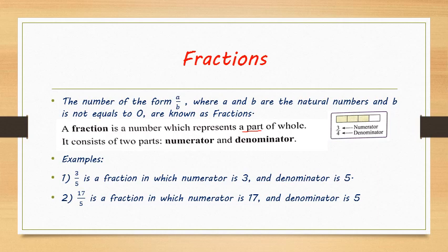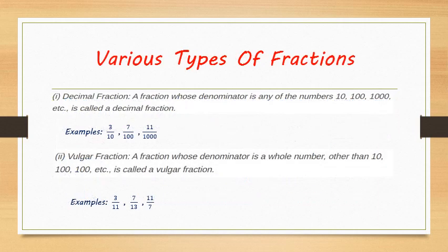The various types of fractions — the first is decimal fraction. A fraction whose denominator is any of the numbers like 10, 100, 1000, etc. is known as a decimal fraction. They are called decimal fractions because when we convert a decimal number into fraction form, for example 0.3 is converted into 3 upon 10, that is why these are called decimal fractions.